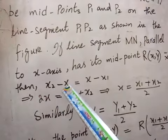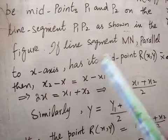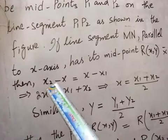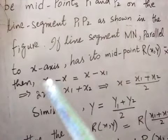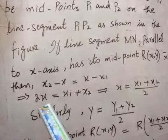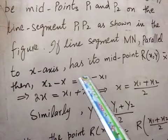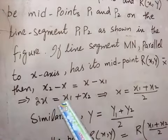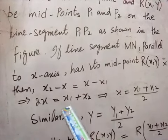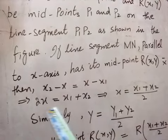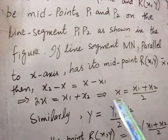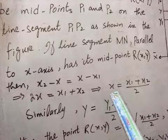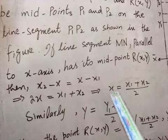Then x2 minus x will be equal to x minus x1. Shifting x to one side and x1 and x2 to the other side, we get 2x equal to x1 plus x2. Dividing both sides by 2, we get x equals x1 plus x2 by 2. This is the x-coordinate of midpoint R.